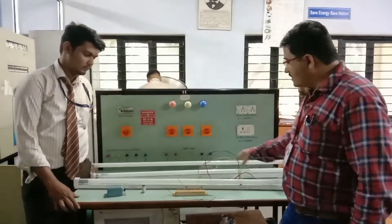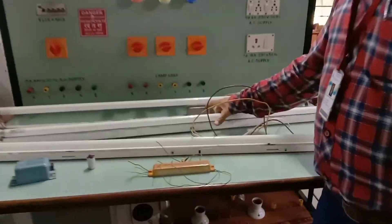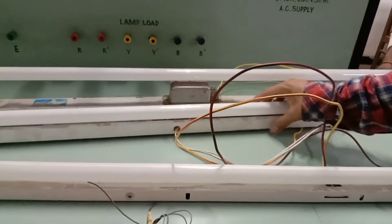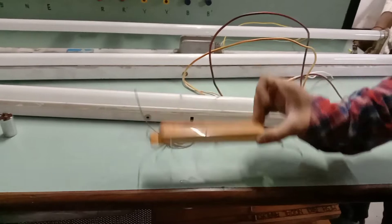In the previous we did the testing on this tube type tube light. Nowadays this electronic ballast type is used. This is the electronic ballast. Here you can observe how it look like.